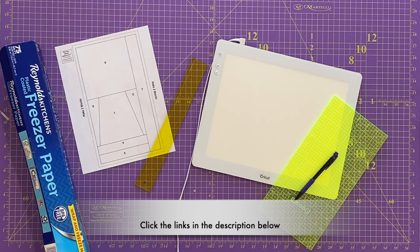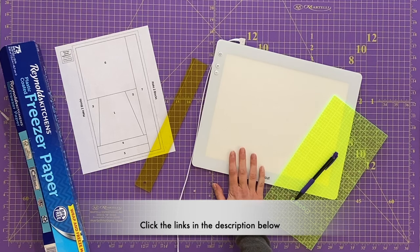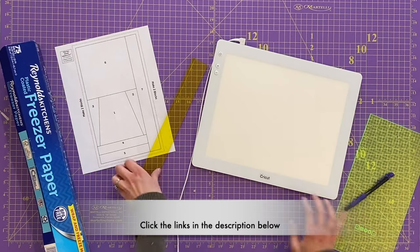As we get started, your supplies are going to be just the same as usual. There's nothing extra here, just the freezer paper, your template, and if you'd like an add a quarter ruler. I'm going to be using my Cricut lightbox to help you see what we're doing and it's a great tool but not necessary. A window works just as well.